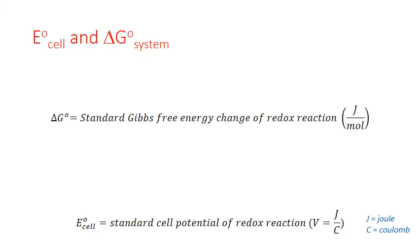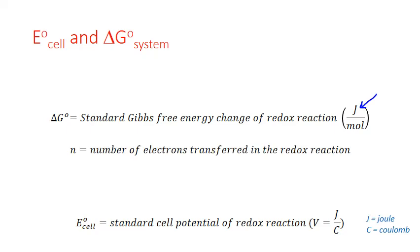The standard unit for electrochemical potential, the volt, is actually a measure of potential energy in terms of joules per coulomb. The standard Gibbs free energy change for any reaction is a measure of potential energy, usually in joules or kilojoules, per mole of reactant. So we have two related units, and we simply need to convert from joules per coulomb to joules per mole. To do that, we need to know how much charge is actually being transferred in a redox reaction per mole of reactants.